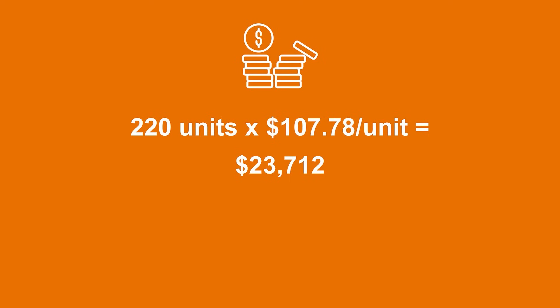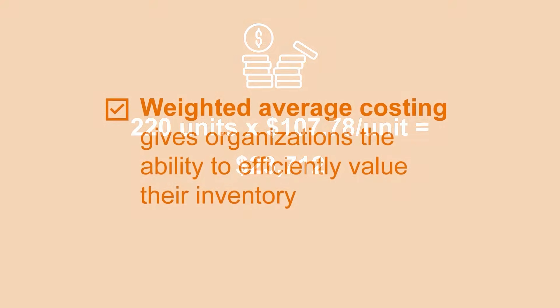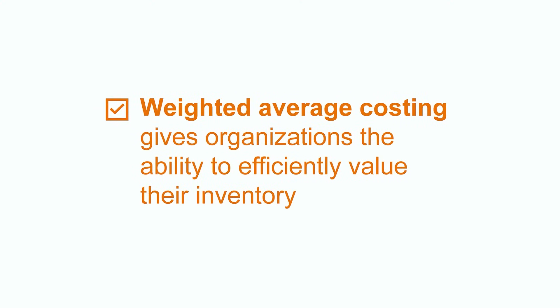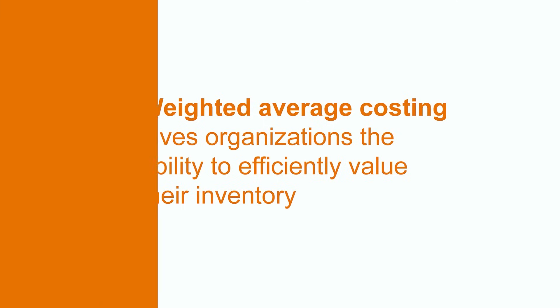For example, if 220 units were sold over this period of time, the company's cost of goods sold would be 220 units times $107.78 per unit, which would equal $23,712. This is the value of the inventory that would be removed from their inventory balance and recorded as their cost for the first quarter of that year. And that brings us to the end of this video. Weighted average costing is an extremely effective tool that companies can use to manage their inventory. It gives organizations the ability to effectively value their inventory by simplifying the accounting and reducing the administrative process of inventory tracking. If you're interested in learning more about this topic or others, please feel free to check out our additional videos on many more related topics.